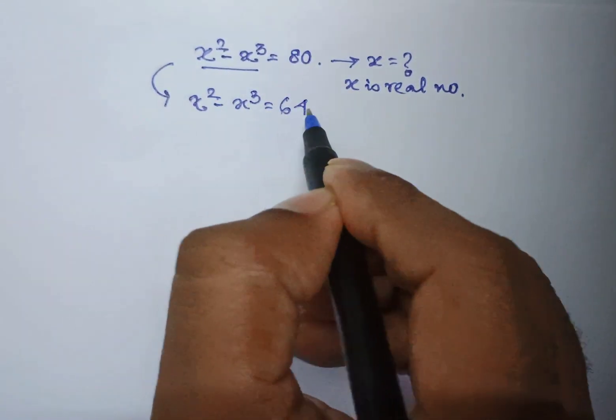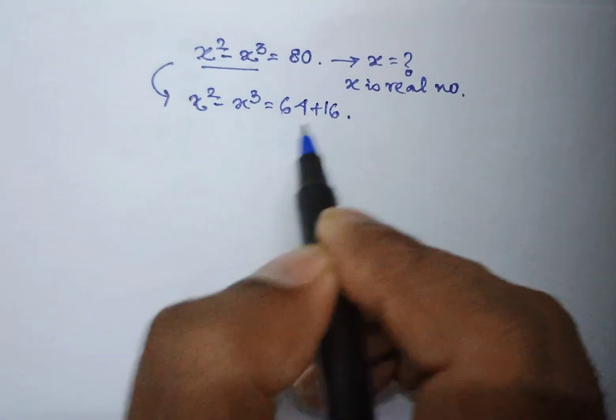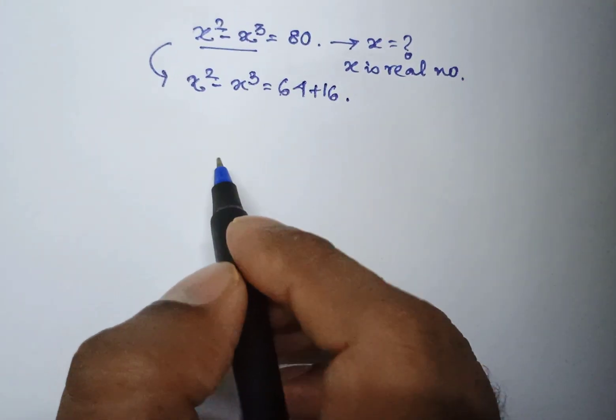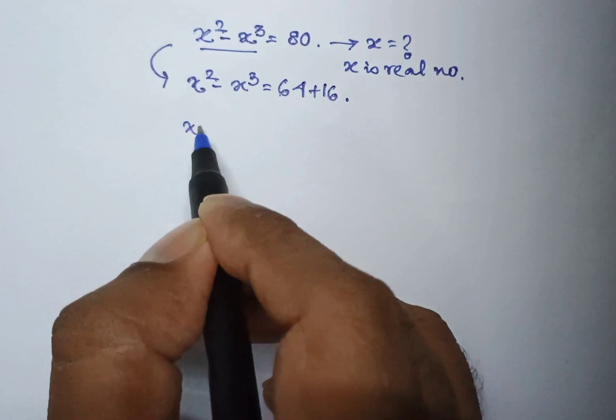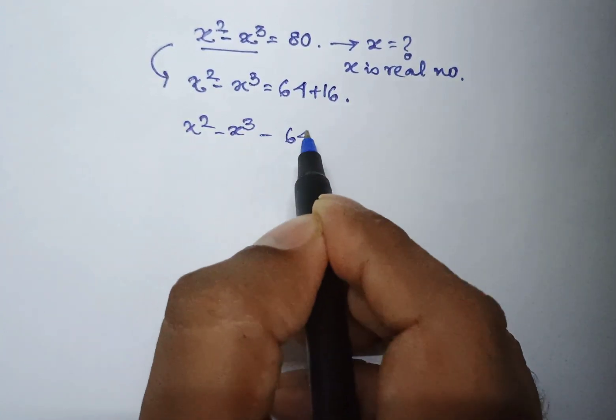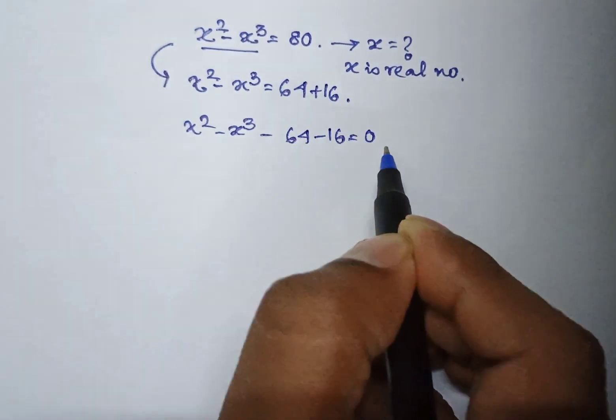i.e. 64 plus 16. Taking 64 and 16 both in the left side, the equation becomes x square minus x cube minus 64 minus 16 equal to 0.